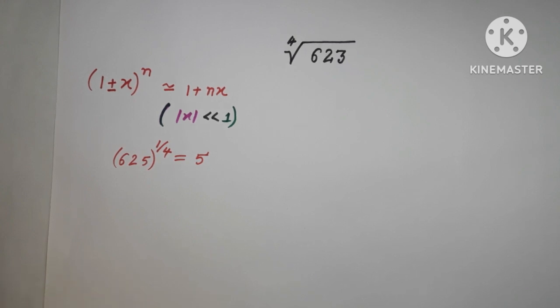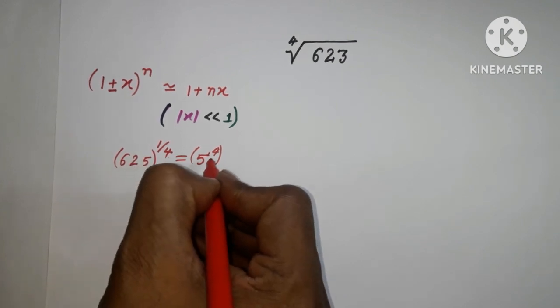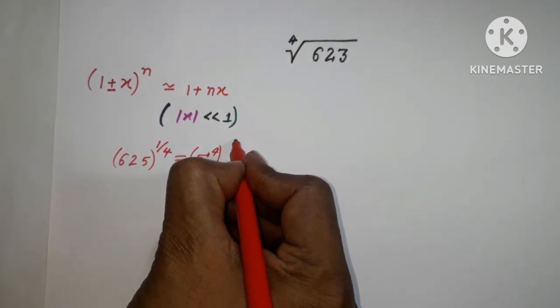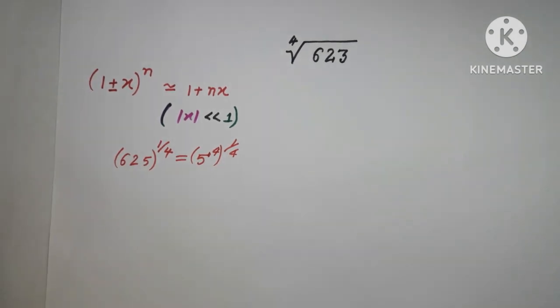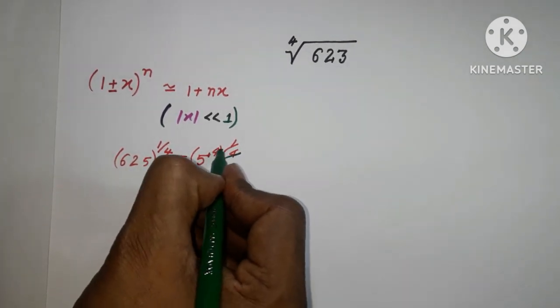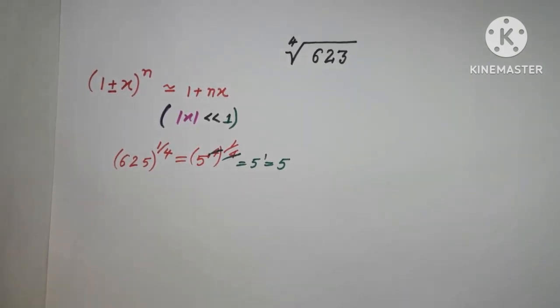I'm going to use this fact. You know 625 can be written as 5 to the power 4, and the fourth root cancels with the power 4, giving us 5 to the power 1, which is 5.